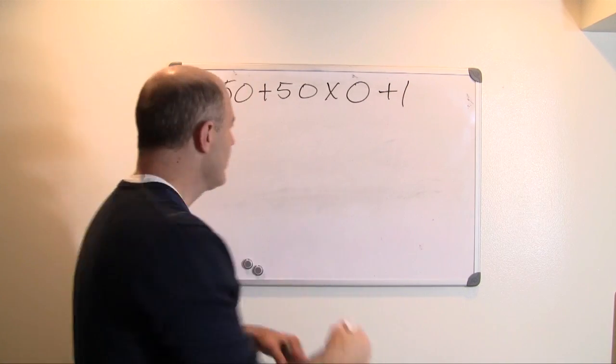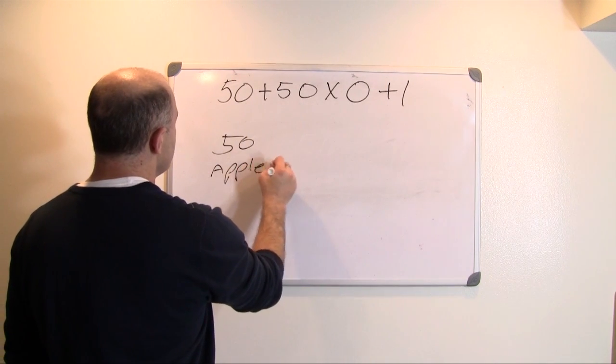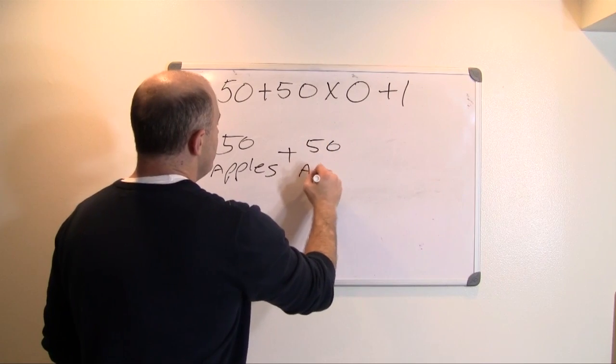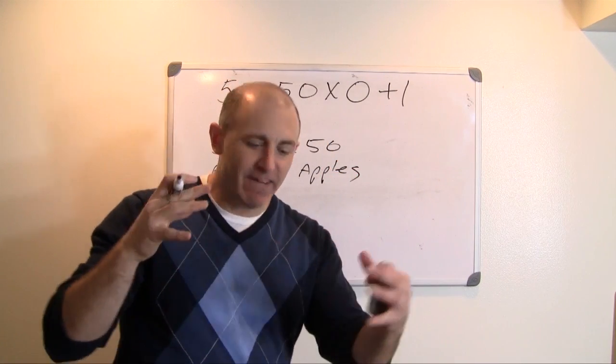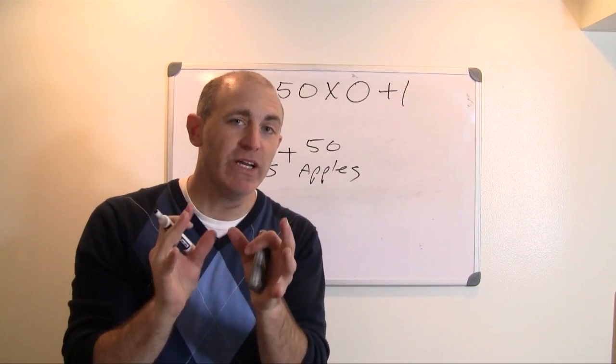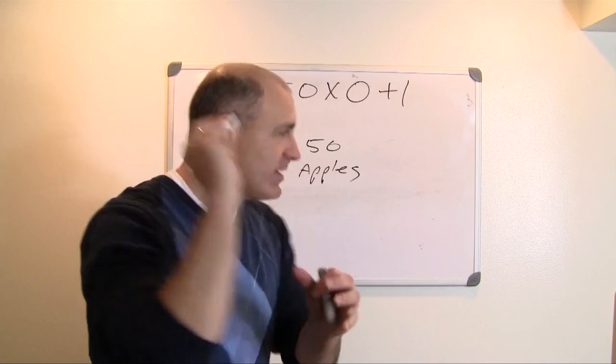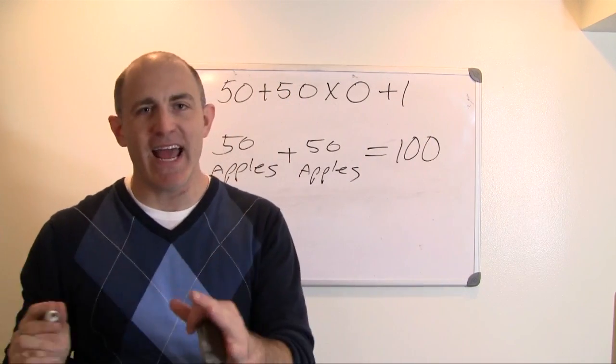Let's look at that. Let's say if you have 50 apples, and you add another 50 apples. Now, if I had 50 apples and 50 apples, and I counted all of those apples, we would have how many? That's right, we would have 100 apples.